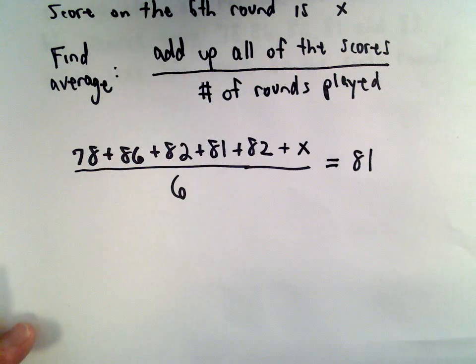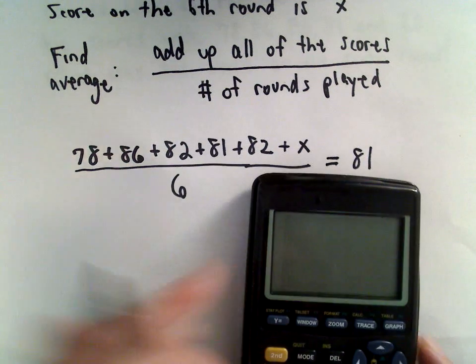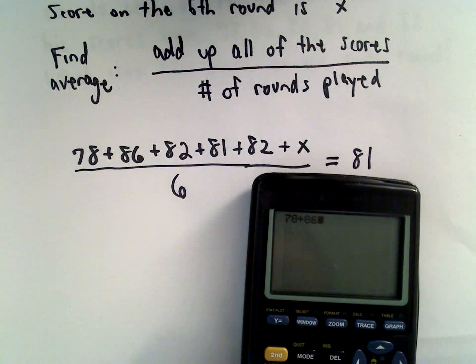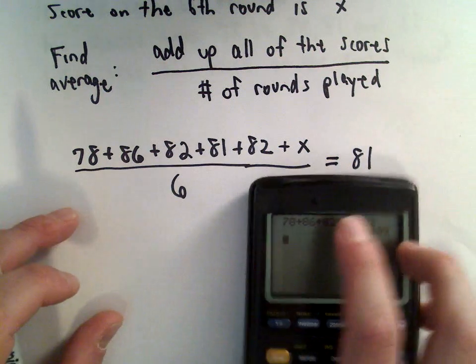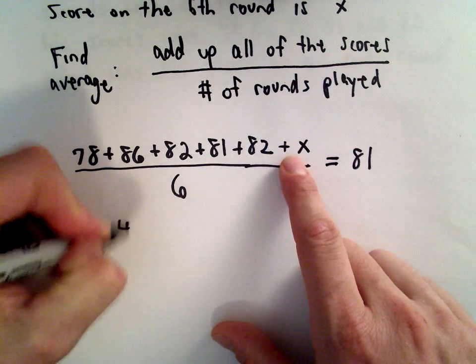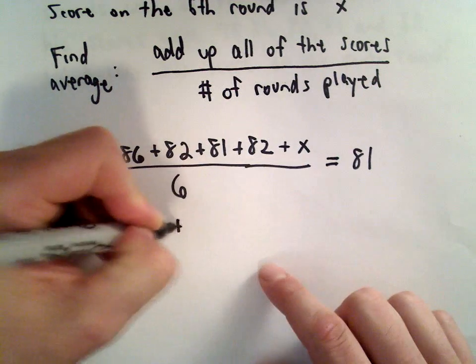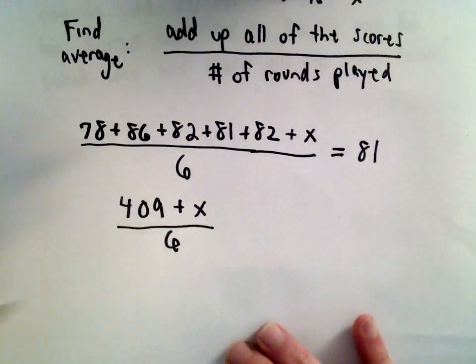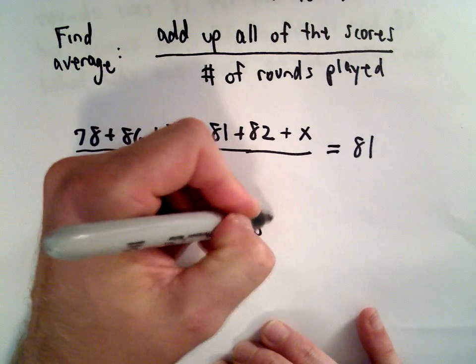We're allowed to use our calculator on this section. I'm going to add up the 78 plus the 86 plus the 82 plus the 81 plus the 82. That's 409. Then we still have our plus X, divided by six, equals 81.